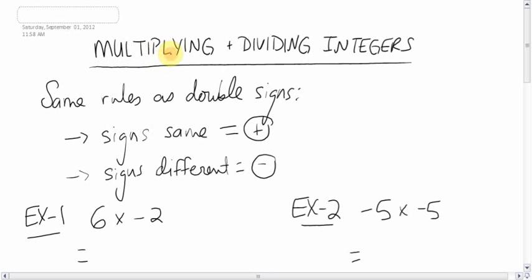Next is multiplying and dividing integers. Adding and subtracting integers were actually probably harder — these are easier because there's really only one simple rule to follow, and it's a rule we've already covered. Remember the double sign rule: when the signs are the same they become positive, when the signs are different they become negative. So when you're multiplying and dividing integers, figure out if the signs are the same or different — same means positive, different means negative — and then just do the math.